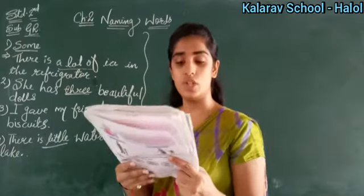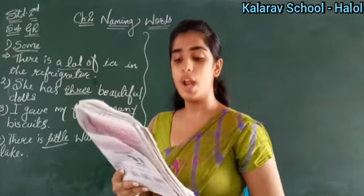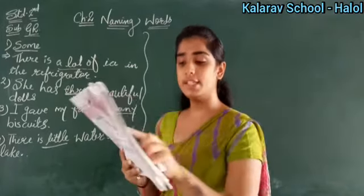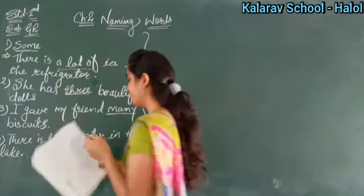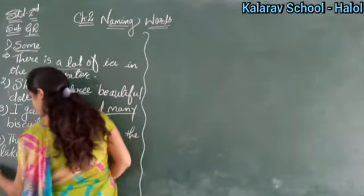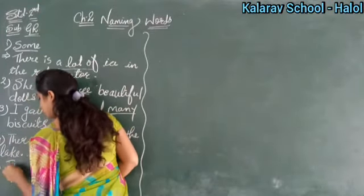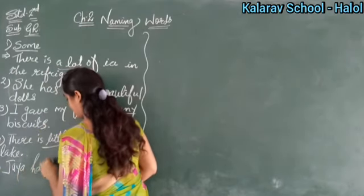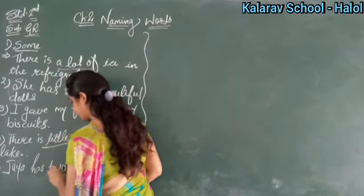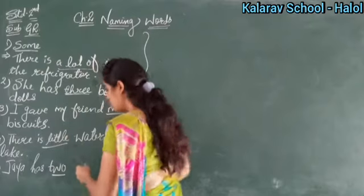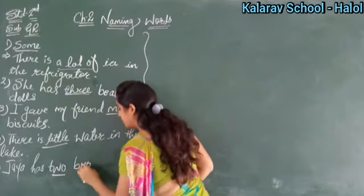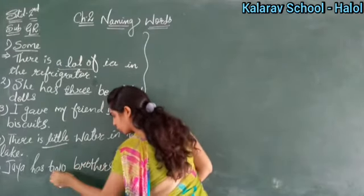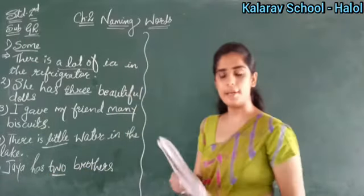Fifth number: 'Jaya has one brother.' In place of 'one,' you have to write 'two.' So it becomes: 'Jaya has two brothers.' Since it is more than one, 'brother' becomes 'brothers' — it becomes plural because the number is greater than one.